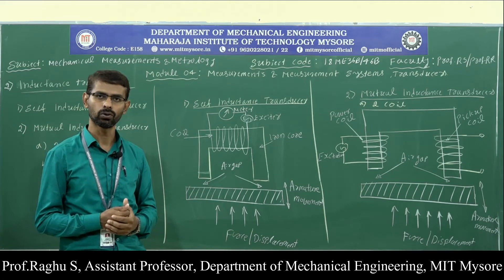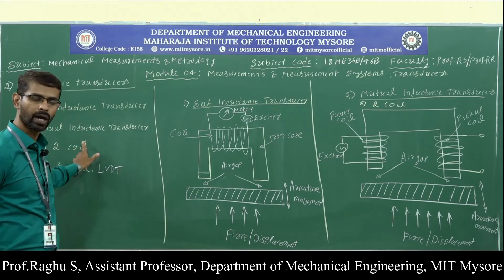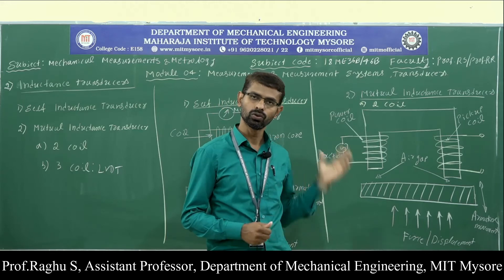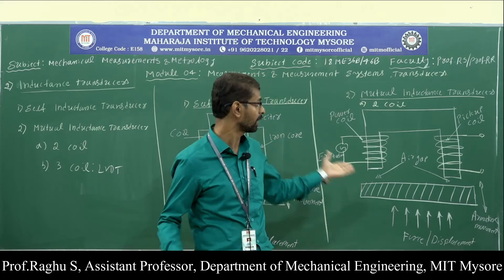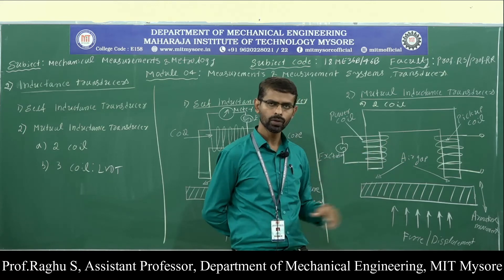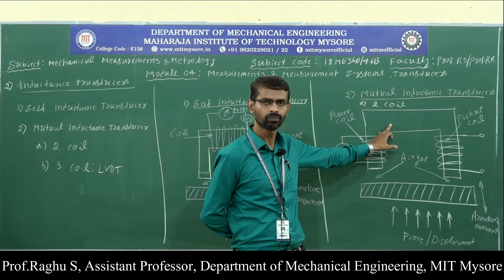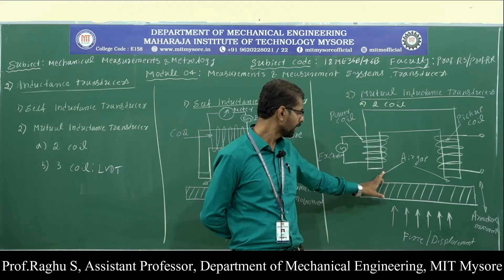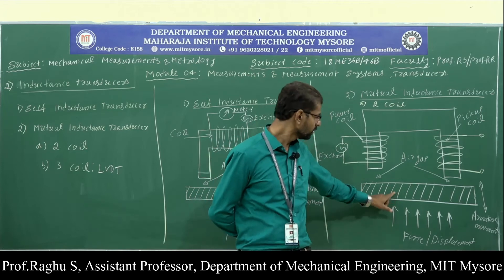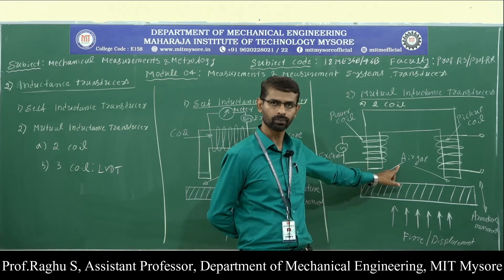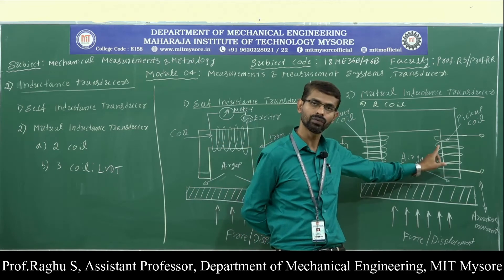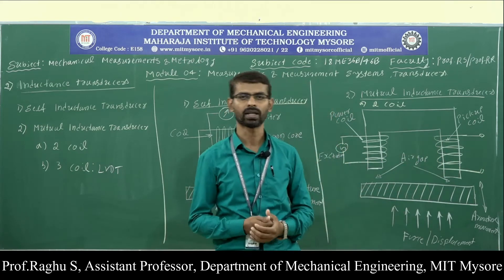In the mutual inductance transducer, we have two coils — a power coil and a pickup coil — wound on an iron core, with an armature and a small air gap. When mechanical displacement is applied to the armature, it moves closer to the iron core, and hence the mutual inductance of the pickup coil changes. The change in mutual inductance can be measured as mechanical displacement or force.